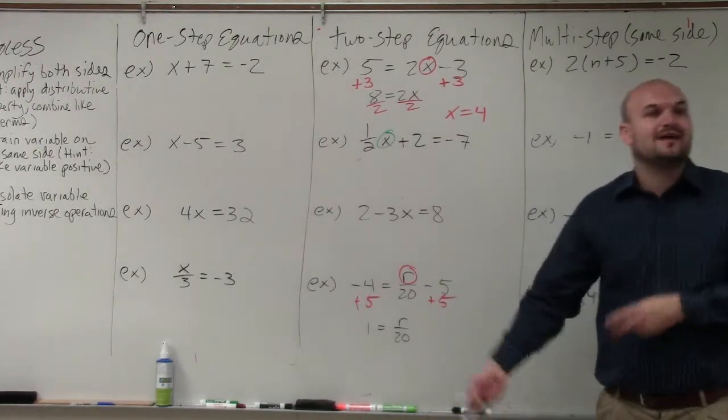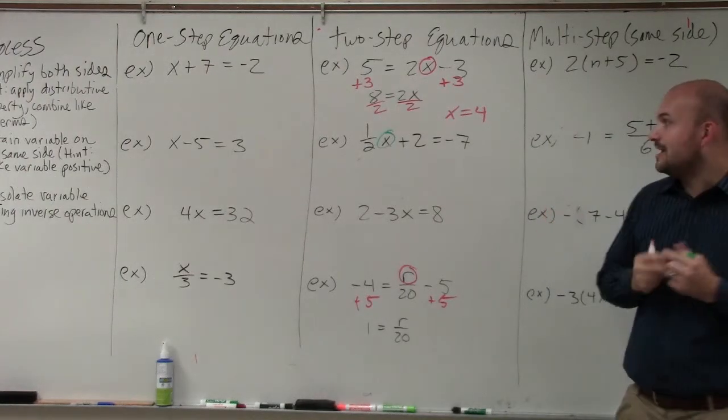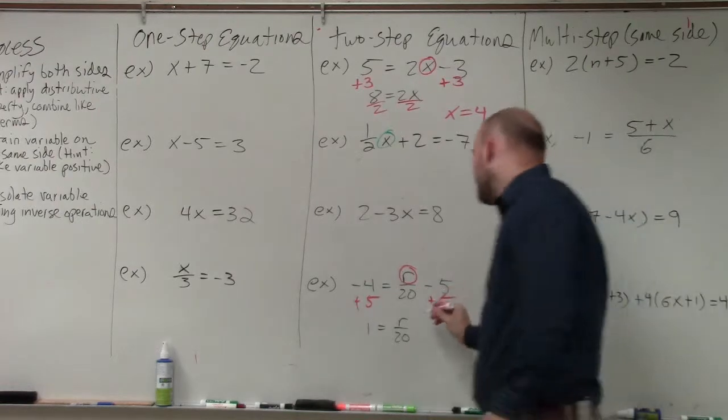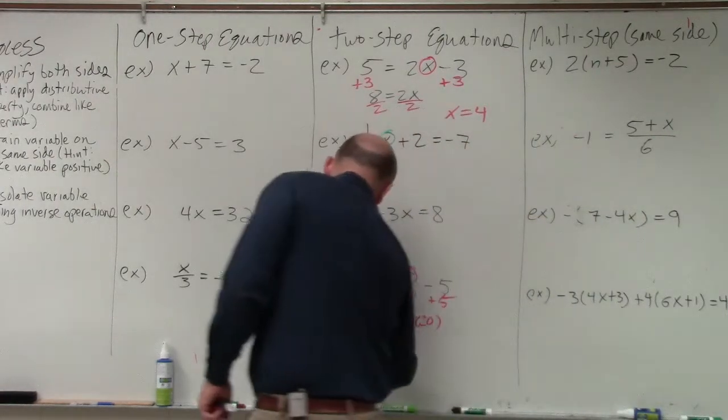To undo division, you're going to have to multiply. Just like when you had multiplied, you had to divide. So we will divide by 20 on both sides.